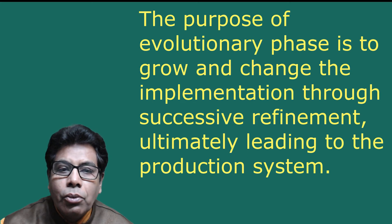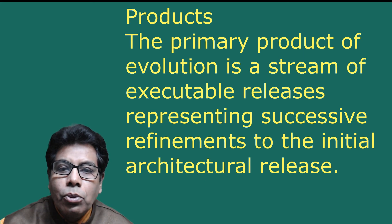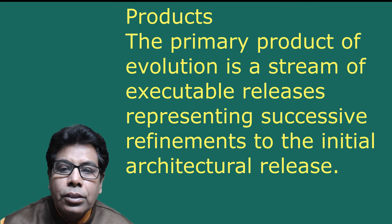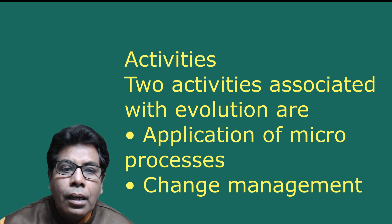The purpose of the evolutionary phase is to grow and change the implementation through successive refinement, ultimately leading to the production system. The primary product of evolution is a stream of executable releases representing successive refinements to the initial architectural release. Secondary products include behavioral prototypes used to explore alternative designs or further analyze dark corners of system functionality. The two activities associated with evolution are application of microprocesses and change management.